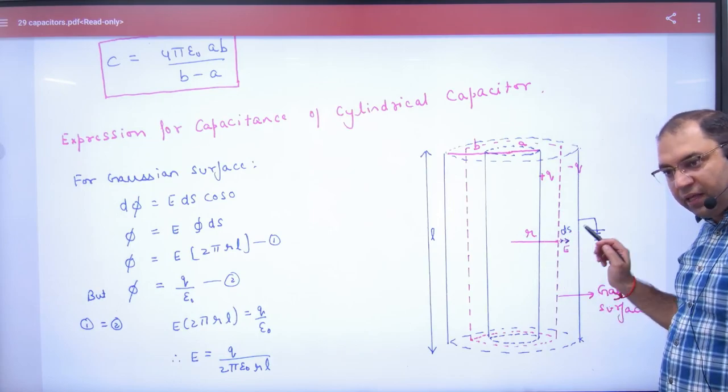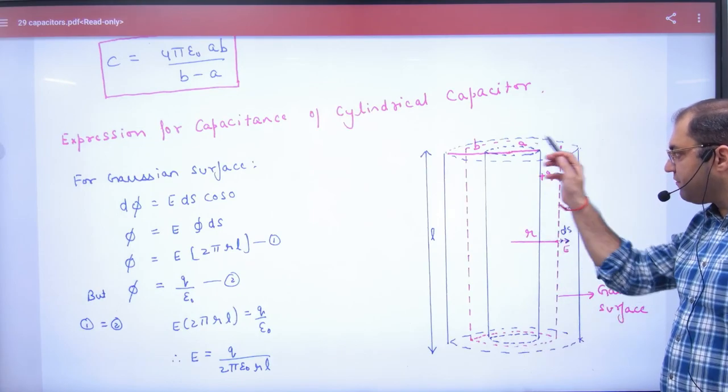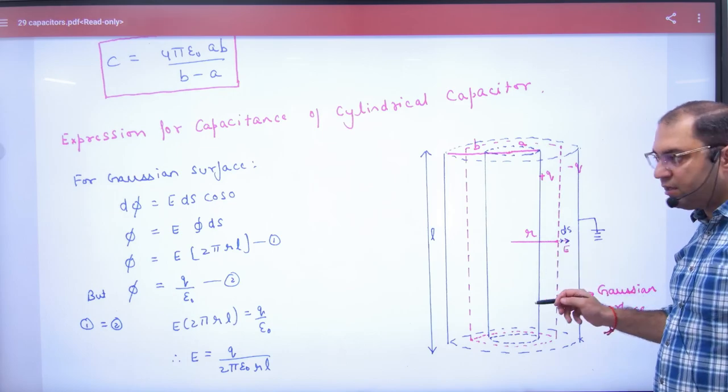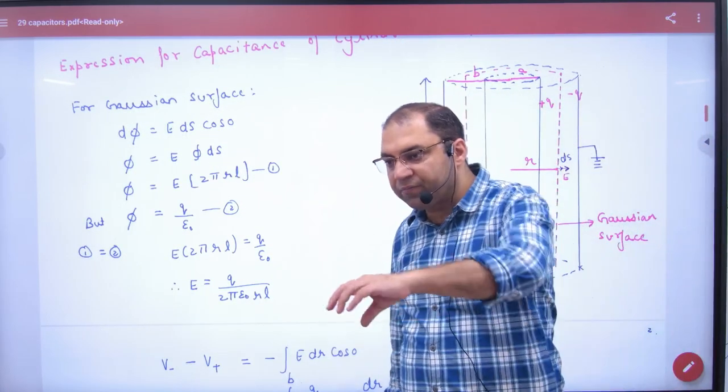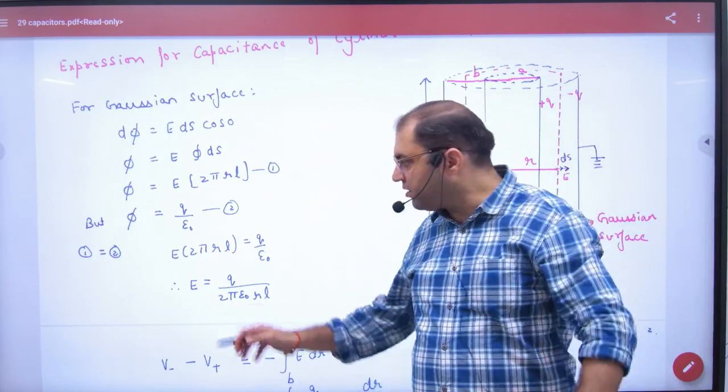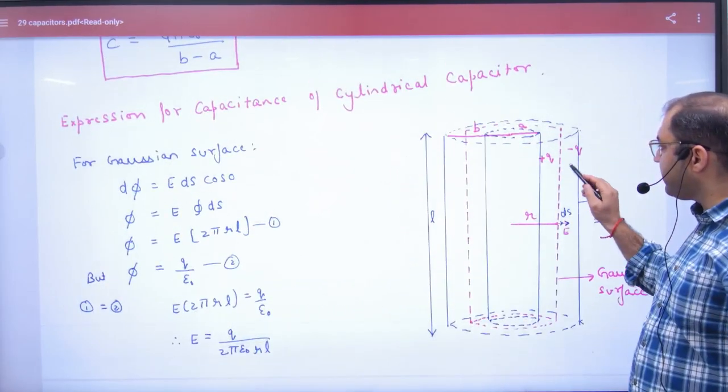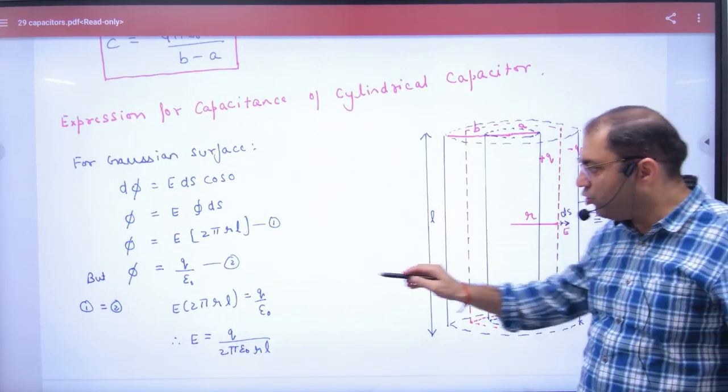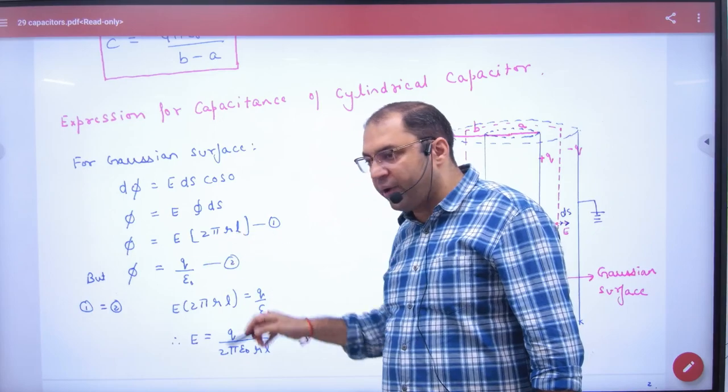So you have to derive R distance E, which is the Gaussian surface cylinder, R radius. So E into 2πRL, surface area, is equal to this Gaussian surface charge Q by epsilon naught. Equate them for E.